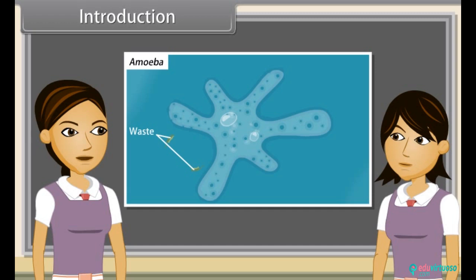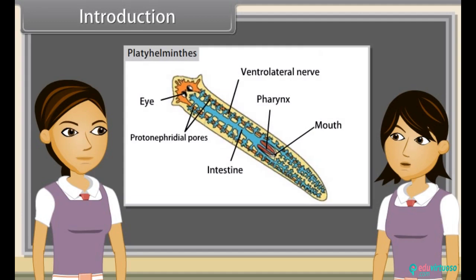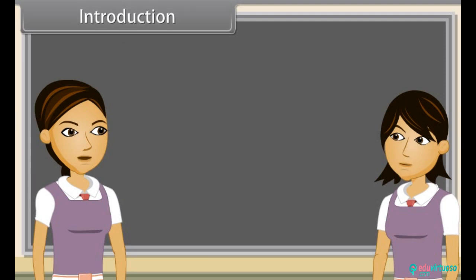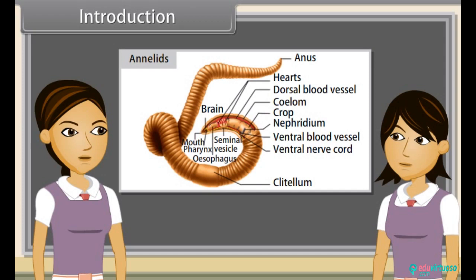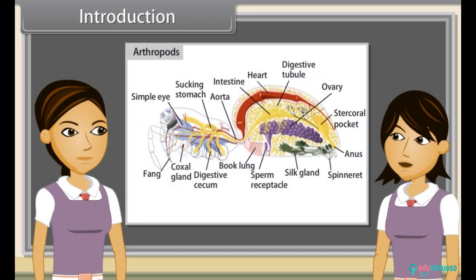Complex multicellular organisms use specialized organs to perform the same function. In platyhelminthes, excretory organs are protonephridia or flame cells. While in annelids, it is nephridia. In arthropods, excretory organs are coxal glands, antennary or green glands, and malpighian tubules.